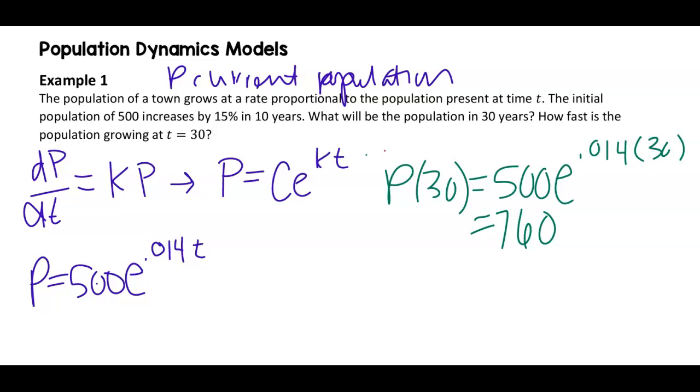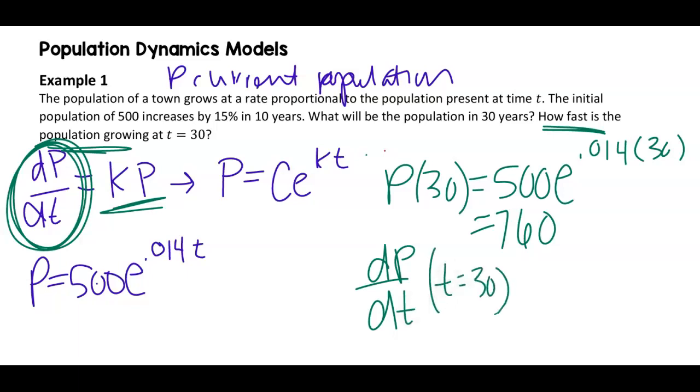How fast is the population growing at t equals 30? This is very interesting. So how fast it's growing, that's dp/dt, right? And we know that that's equal to k times p. So I want to know in this one, what is dp/dt at t equals 30? Well, that's k times the population at that time. So like each year, if we go back and think about what k is saying, k is saying each year, I'm growing by like 1.4%. So that's always the growth rate. Well, how fast is that then? If I know my population is 760. So if I take that number and multiply it by 760, I end up getting about 11 people per year is our growth rate there.